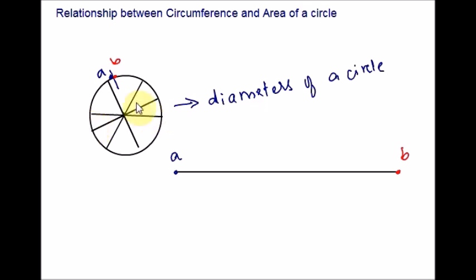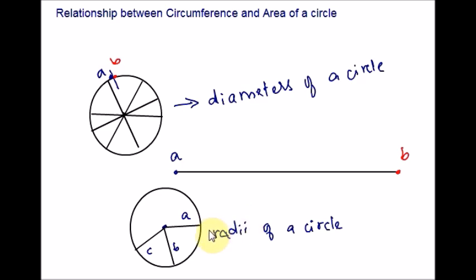All diameters are of equal length. The radius of a circle is a line segment from the center of the circle to a point on the edge. It is just half the diameter, so its length is half the length of the diameter. Again, there are many radii but they all have the same length.